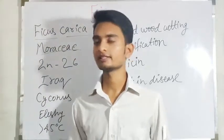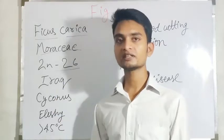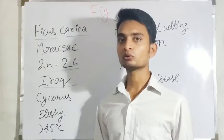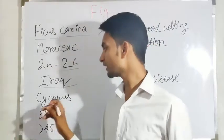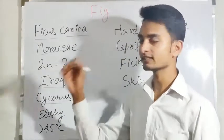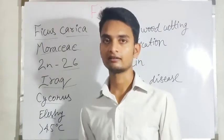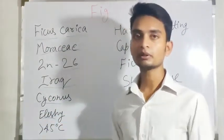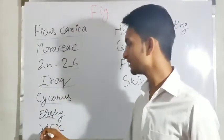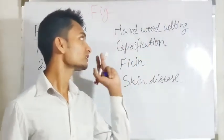Fig is called Anjeer. Its origin place is West Asia or Iraq. The types of fig — prakar kya hota haye — to Syconus hota haye. The edible part of Ficus is known as fleshy aryl. The optimum temperature of fig is less than 45 degree Celsius.